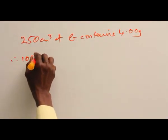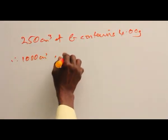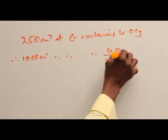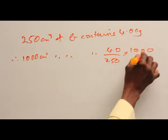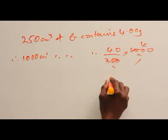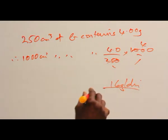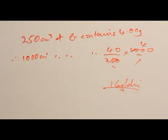Therefore, 1000 cm³ of solution contains 4.0 over 250 times 1000, which equals 16.0 grams per dm³. So, this is the concentration of the impure acid.